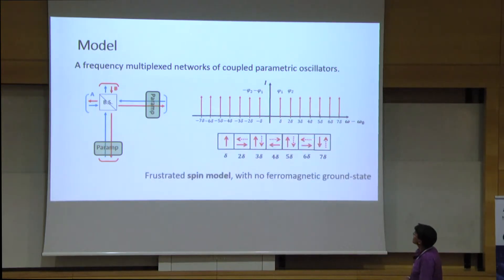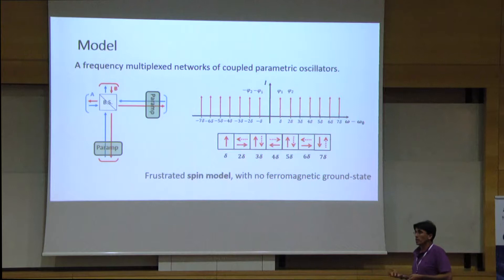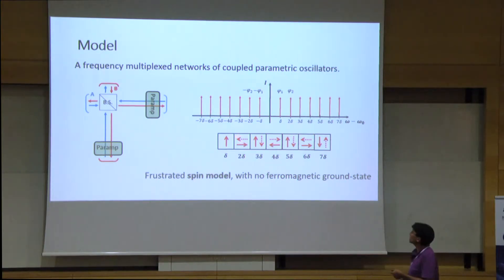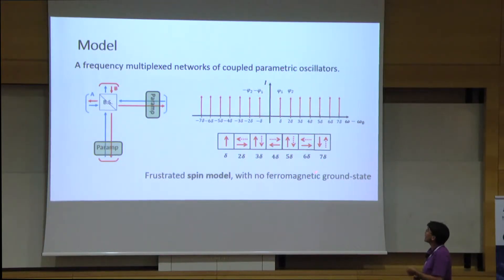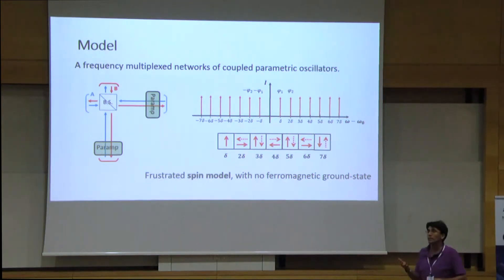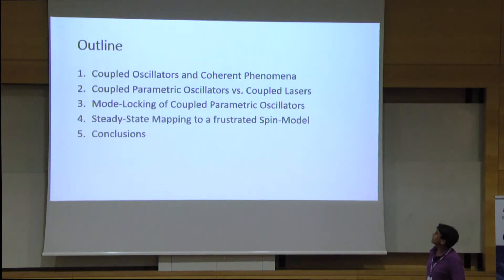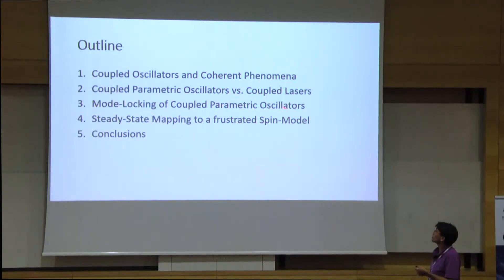Funny enough, they are analogous to a spin model that is very uncommon — a spin model where spins do not align ferromagnetically, not anti-ferromagnetically, but at 90 degrees to one another. Because it's 90 or minus 90, it's highly frustrated — all of those are actually ground states. So I'll talk about coupled oscillators and coherent phenomena, compare coupled parametric oscillators to coupled lasers, discuss mode locking of coupled parametric oscillators, and then show the mapping to a frustrated spin model.